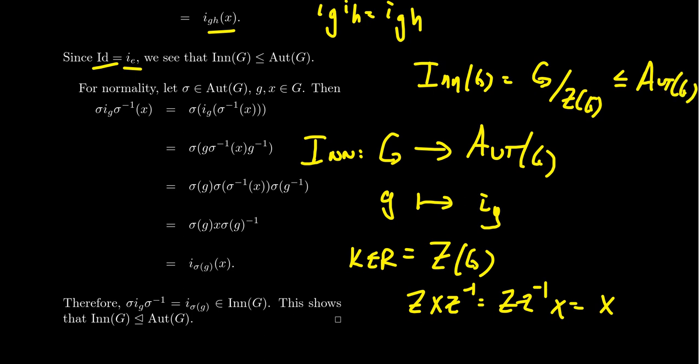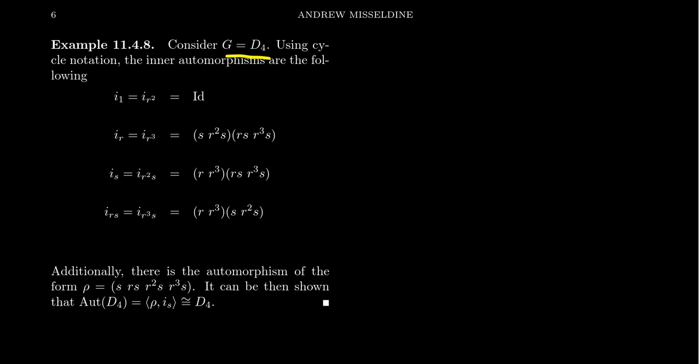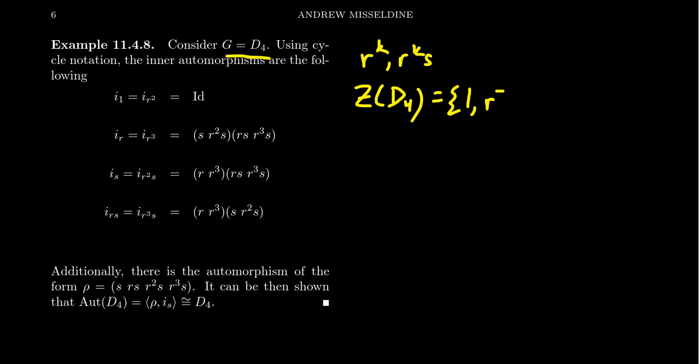Let's look at an example: the group D4, the dihedral group of order eight — the symmetry group of a square. We should take something non-abelian so that the inner automorphisms are non-trivial. Any element in D4 can be written as R^k or R^k·S, where k ranges from 0 to 3. The inner automorphisms of the identity and of R squared both give the identity map, because the center of D4 is {identity, R squared}, and those elements commute with everything.